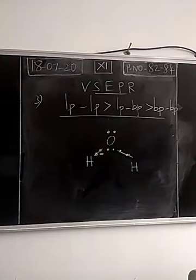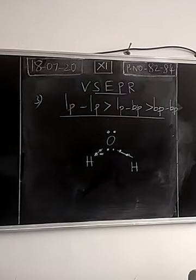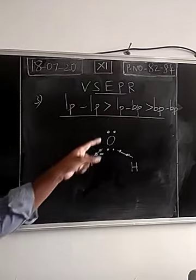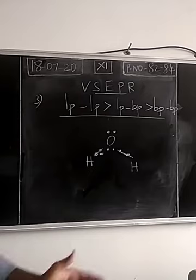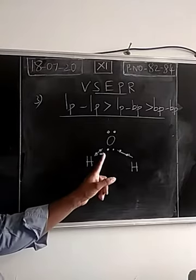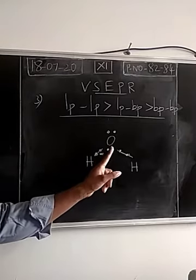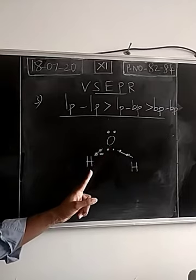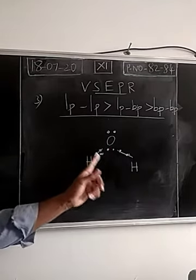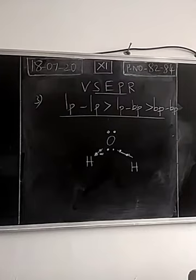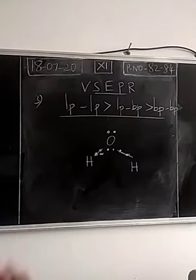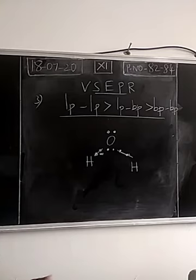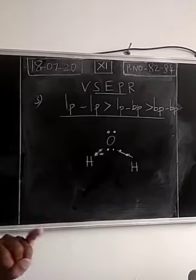Why is lone pair–lone pair repulsion so much greater? These lone pair electrons occupy more space and are attracted only by the nucleus of the same atom. So repulsion will be more. But in the case of bond pair electrons, they are not only attracted by the nucleus of oxygen — they are also attracted by the nucleus of hydrogen. So bonded pair electrons will have less repulsion.